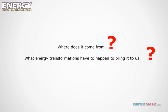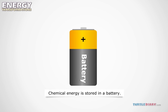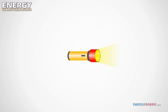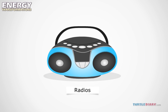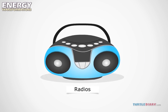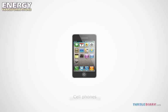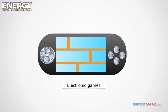Some of the energy we use every day is stored in batteries. This is chemical energy. Batteries are used to power a lot of things. Some examples are flashlights, radios, cell phones, and electronic games.